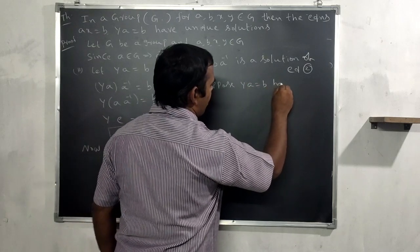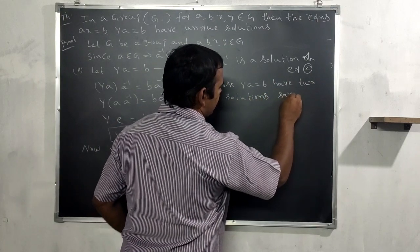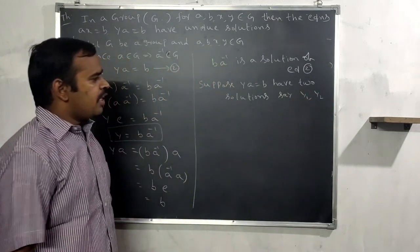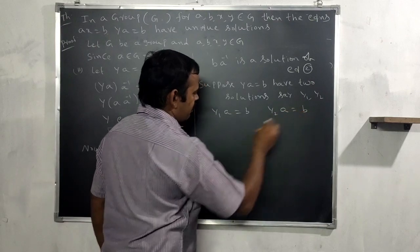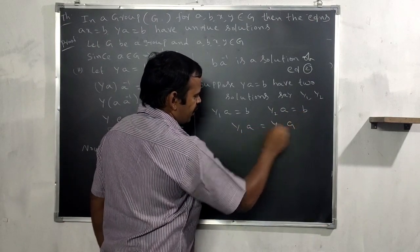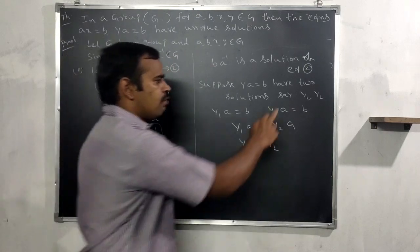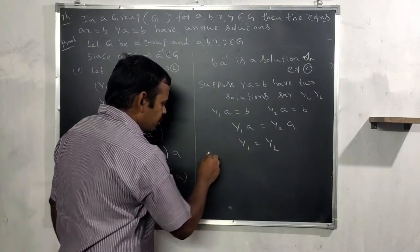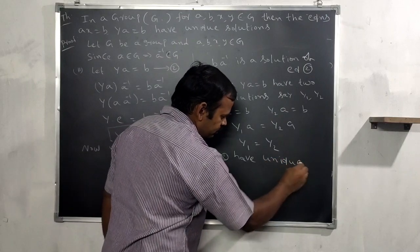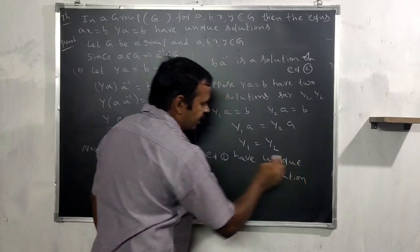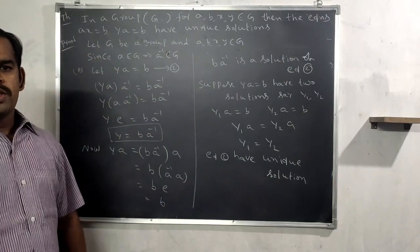Say y1 and y2 are two solutions. Then y1 a = b and y2 a = b, therefore y1 a = y2 a. By right cancellation, y1 = y2. So any two solutions are equal, meaning ya = b has a unique solution. Therefore both ax = b and ya = b have unique solutions.